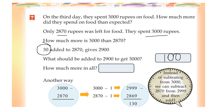How much more in all? 0, then 10, 9, 2. 10 minus 7 is 3. 9 minus 1 is 8. So 130 rupees.